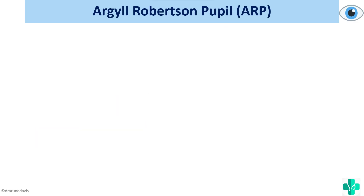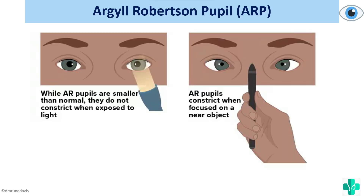An important applied aspect related to the light and accommodation reflex is the Argyll Robertson pupil. In this case, when the patient is shown a torch onto one eye, the pupils will not constrict — meaning the light reflex is absent. But when the patient is asked to focus on a near object, pupillary constriction occurs — meaning the accommodation reflex is present. So for Argyll Robertson pupil, accommodation reflex is present but the light reflex is absent.